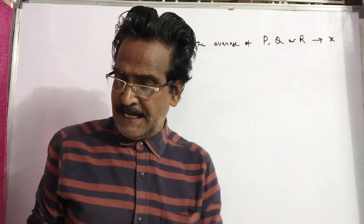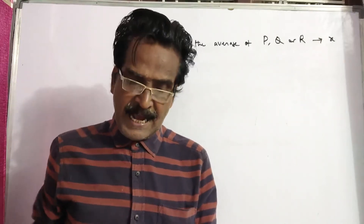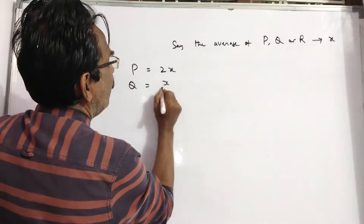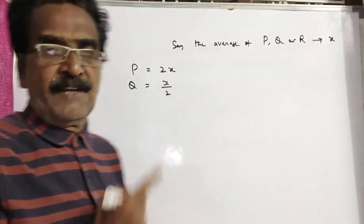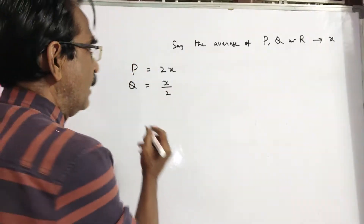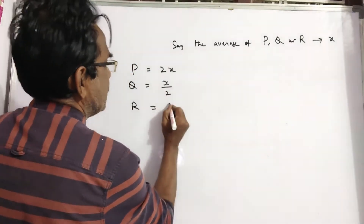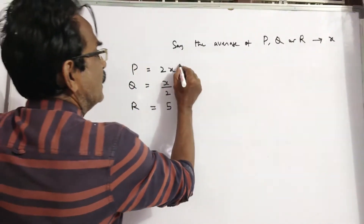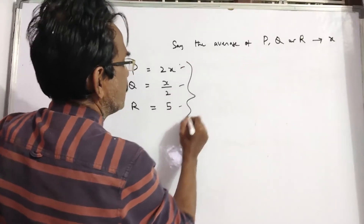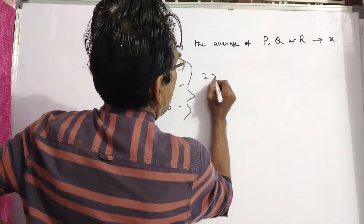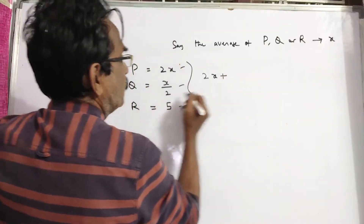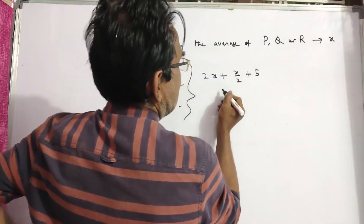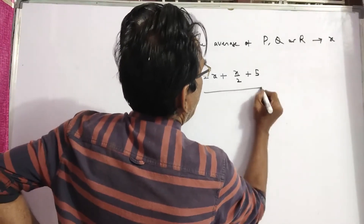And then, Q's age is one half the average age of P, Q and R. Q's age is half of the average age of P, Q and R. R's age is equal to 5 years. Now, this plus this plus this — the sum of the ages of P, Q, R.